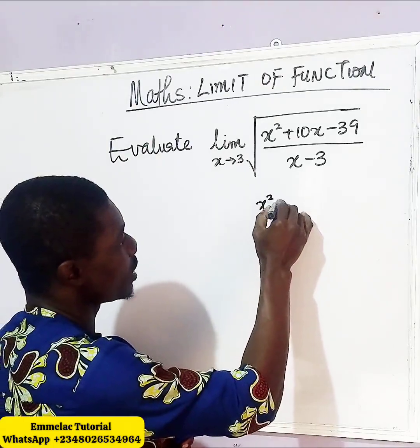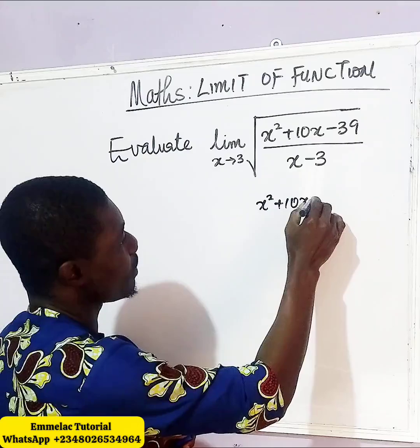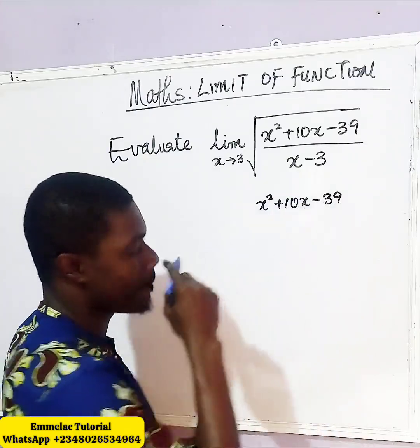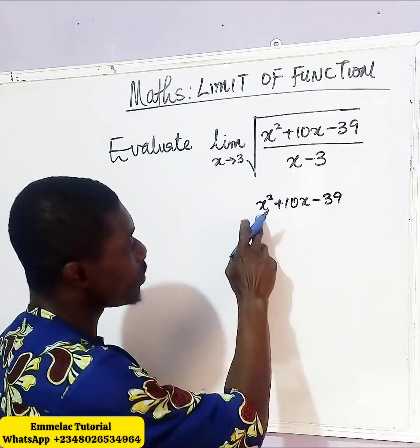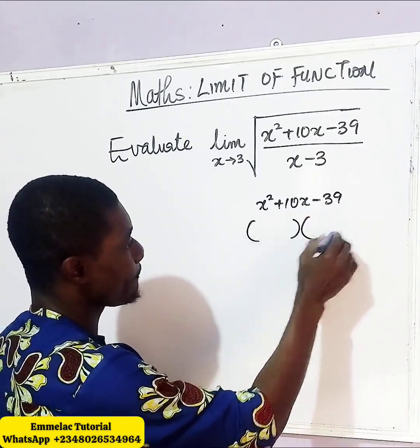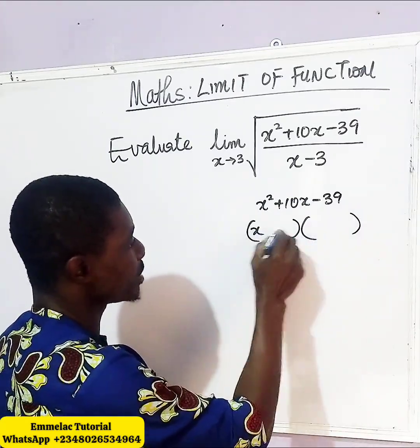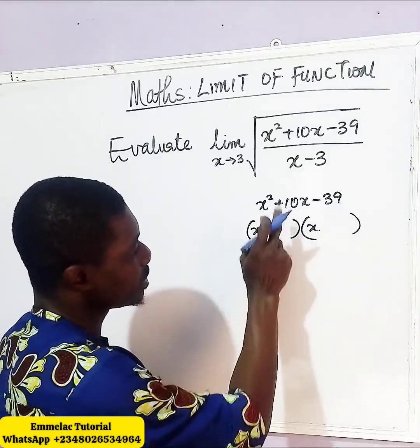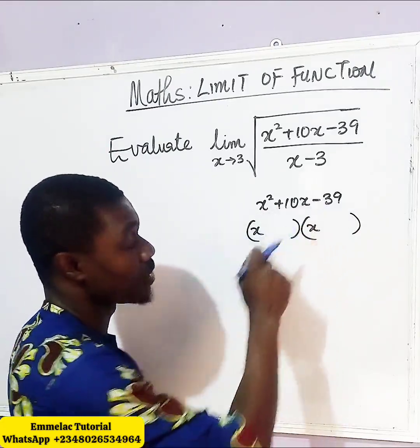Here we have x squared plus 10x minus 39. Now, since the leading coefficient here is 1, you can just do it this way. Then, you add x, add x. Now, since this sign is plus and this is minus...